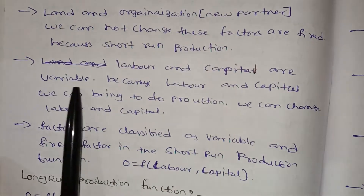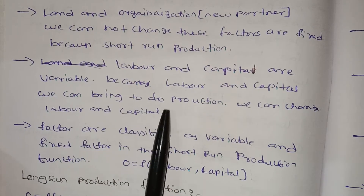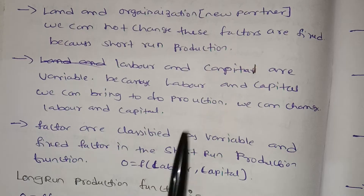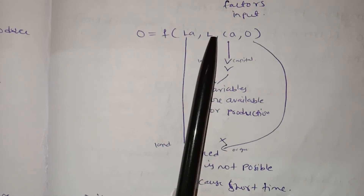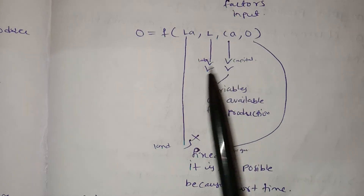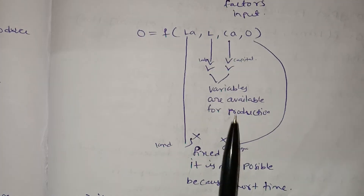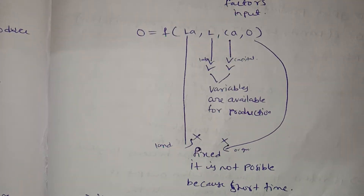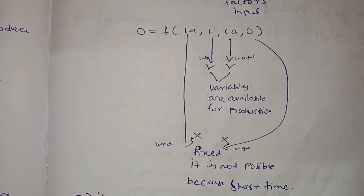Labor and capital we can change to do production. We can change the labors and the capitals. These are called variable factors in the short-run production function.